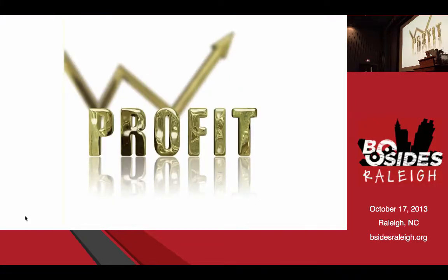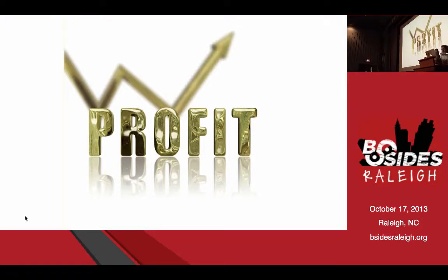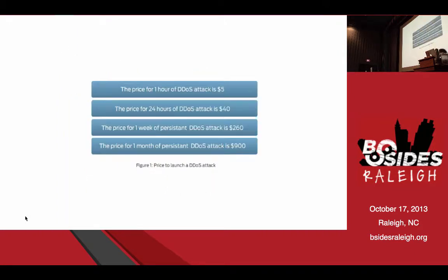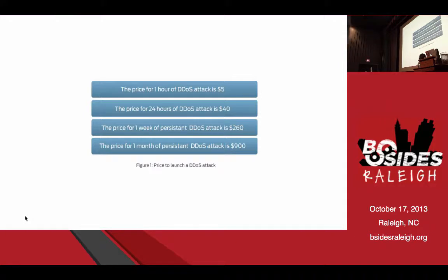One of the biggest reasons people launch these is profit — follow the money. If you are a bot herder, you can sell this. A survey of the going rate on the open market: you can buy one hour of a denial of service attack for five bucks. You can buy a month for $900. If somebody really pisses you off and you want to take them offline, you just drop a grand and they're gone.